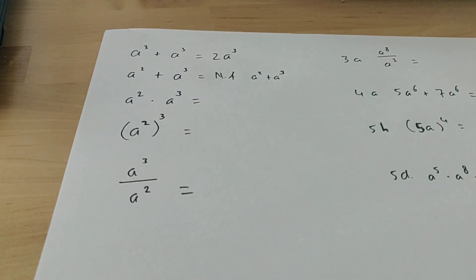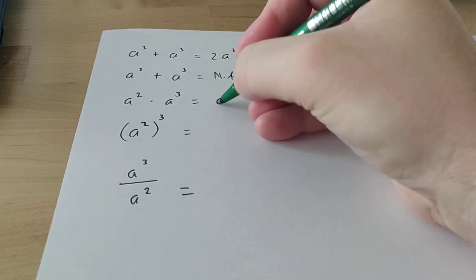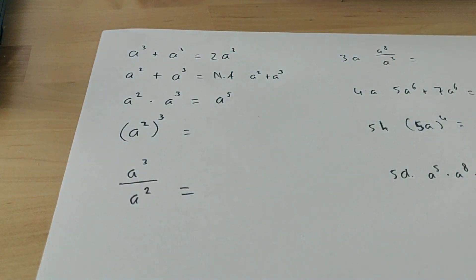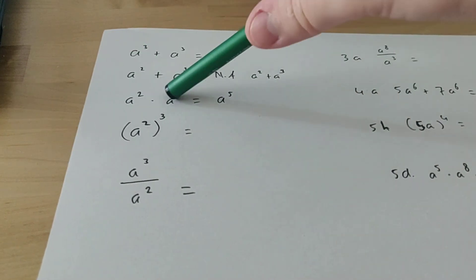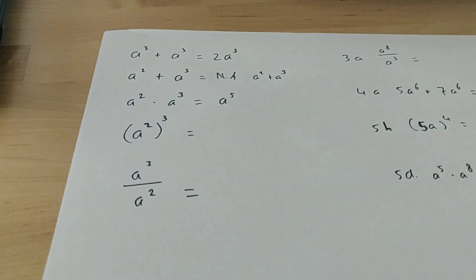Now times, if you have a squared times a to the power of 3, then you add the powers. So you do 2 plus 3, so this is a to the power of 5. The reason for that is because here you have 2 a's and then you have 3 a's. So together you have 5 a's. So that's why you do a to the power of 5.